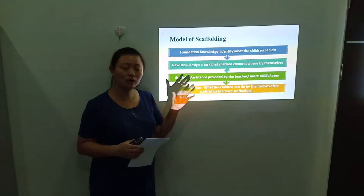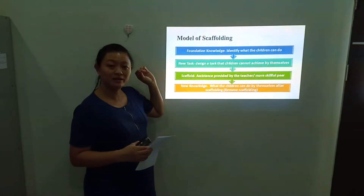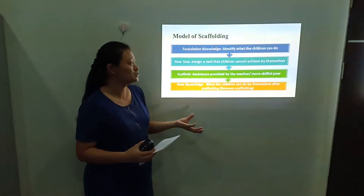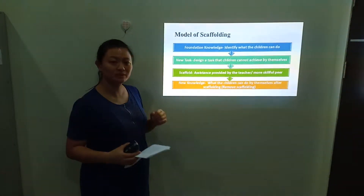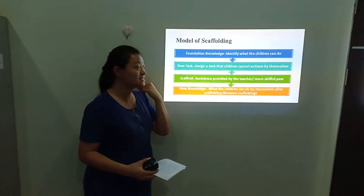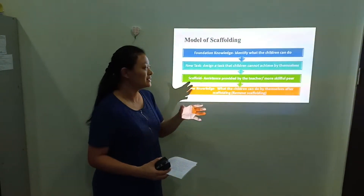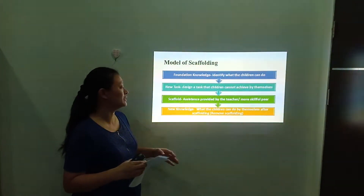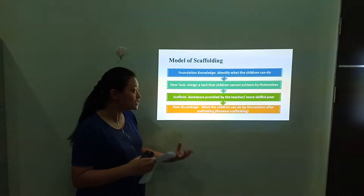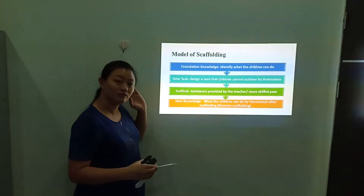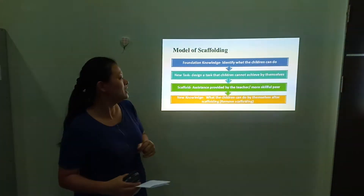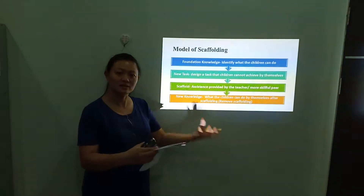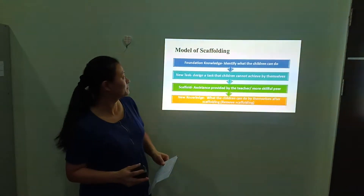How does scaffolding work? First, teachers need to know the foundation knowledge and identify what the children can do. Then the teacher gives the children a new task — designed to challenge them because it's a problem the children cannot solve by themselves. Through scaffolding, assistance is provided by teachers or more skillful peers. When new knowledge is acquired, the children will be able to do it by themselves, and the scaffolding will then be removed.